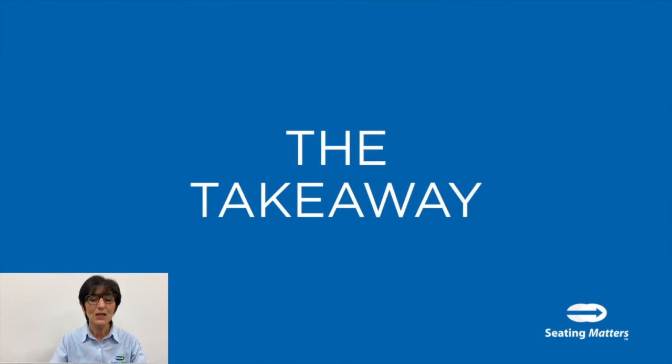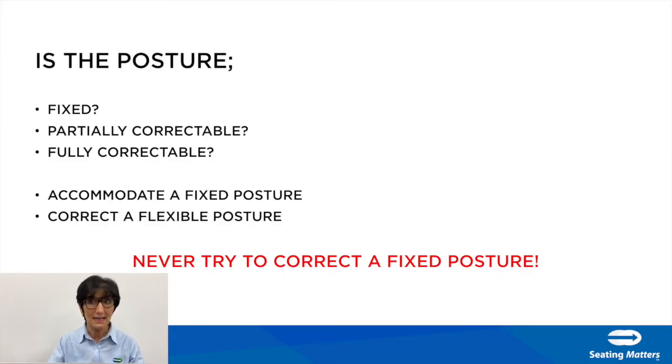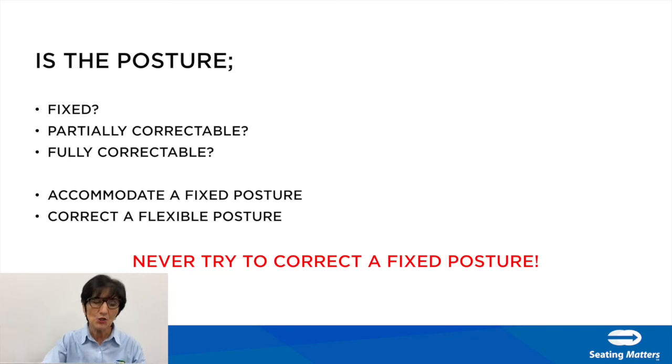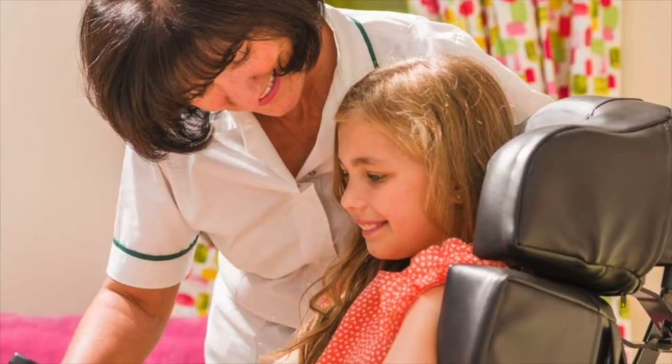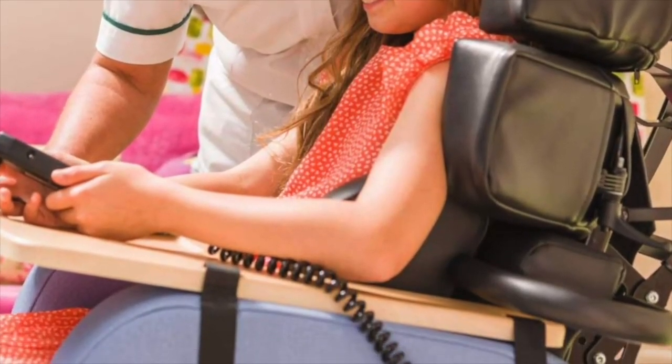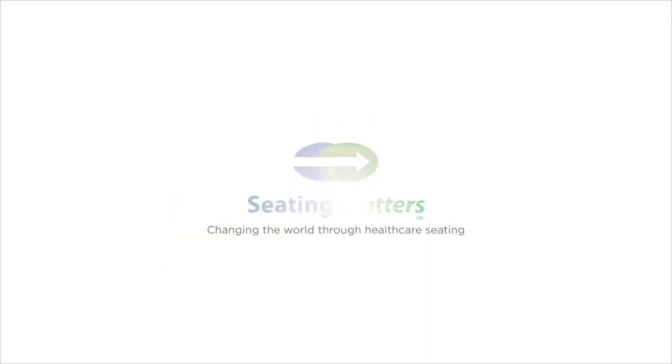The takeaway is: ensure you've established whether the posture is fixed, partially correctable, or fully correctable. Accommodate a fixed posture and try to correct a flexible posture — never try to correct a fixed posture. I know there have been lots of questions about the assessment process and we'll come back to it over and over again. At Seating Matters we are here to help you and your patients — if you have a patient who would benefit from what you've learned today, you can set up a person-to-person or online demonstration to view our products and put this into practice.